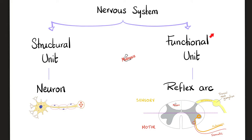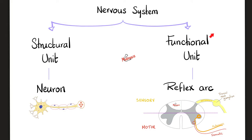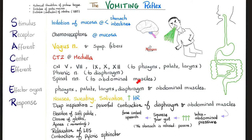Remember that the reflex arc is the functional unit of the nervous system. Any reflex has SARASIR — which in Arabic means cockroaches. S is stimulus, R is receptor, A is afferent (which goes from the receptor to the central nervous system), center is in the central nervous system, the efferent will leave the CNS and go to the effector organ to elicit a response. For the vomiting reflex: the stimulus is irritation of the mucosa in the stomach or intestine, or mechanical stimulation of the posterior tongue, or obstruction of the intestine. Receptors are in the mucosa — usually chemoreceptors, but if stimulating the back of the tongue, mechanoreceptors.